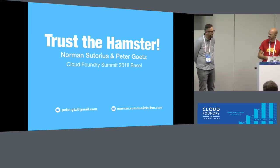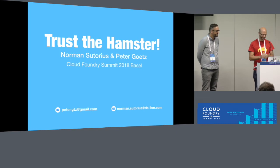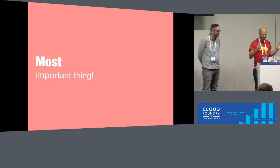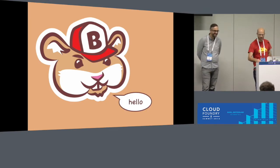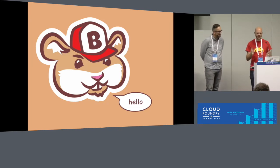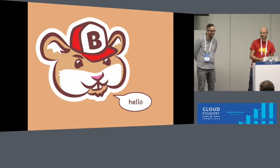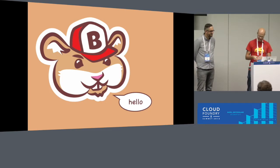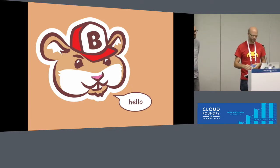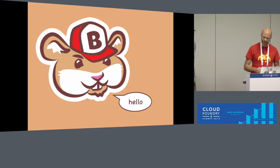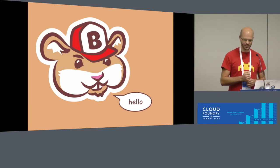Anyways, we'll be talking about the Bit Service today. My name is Peter, this is Norman. The most important thing first: we have a new logo and it's a hamster. The hamster eats your bits and keeps them for you until you actually need them again. We also have stickers — come to us after the talk, and there are more at the IBM booth.